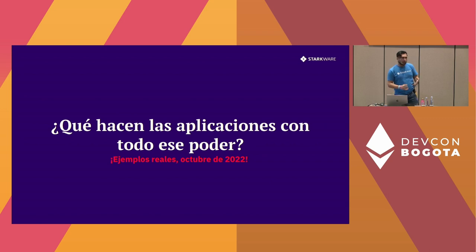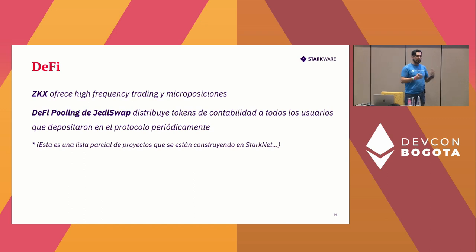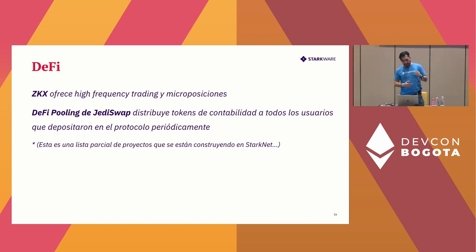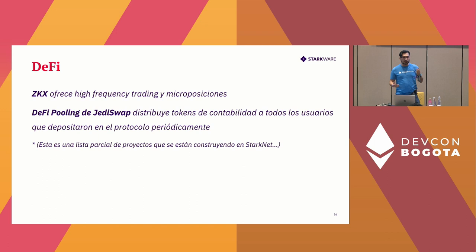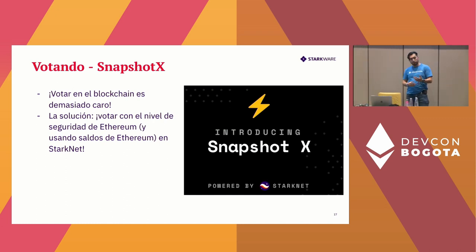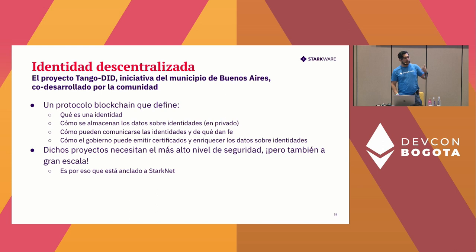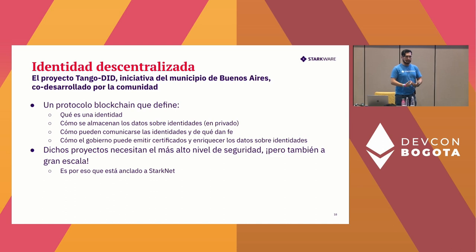Now let's talk about what we can do with all this power that cheap computation can provide us. For example, we have a solution called DYDX — a company offering high-frequency trading, which is impossible on layer one because micro positions and the cost make no sense. Voting is very expensive too, so there are solutions like Snapshot X that allow much cheaper voting. There are a lot of applications already being developed inside StarkNet using all this power.